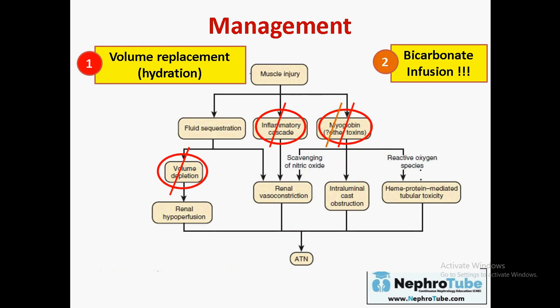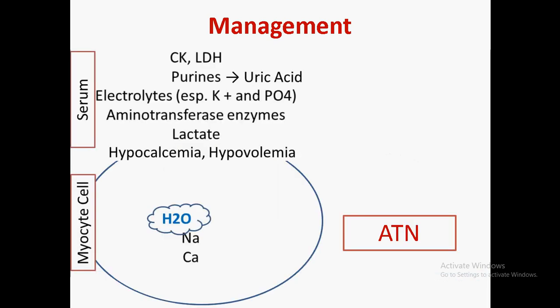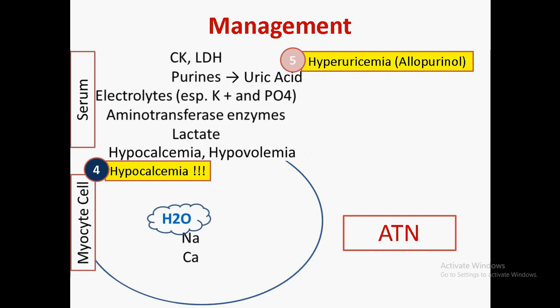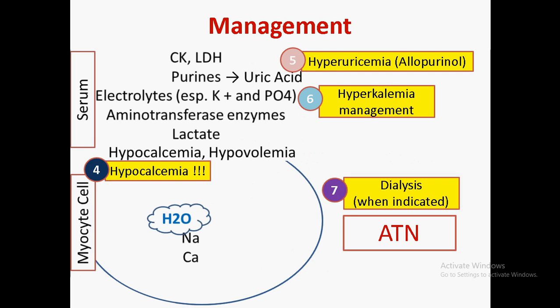We may use bicarbonate infusion because myoglobin is more concentrated in acidified urine — alkalinizing the urine may decrease myoglobin concentration in tubules. We may also use mannitol infusion for forced diuresis and washing out of myoglobin in urine. We also have to treat hypocalcemia, manage hyperuricemia with allopurinol, manage hyperkalemia according to standard protocols, and finally use dialysis when indicated.